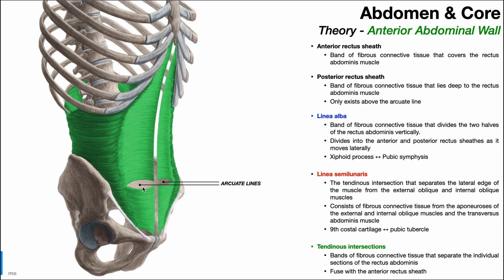At the arcuate line, there is a gap where the posterior rectus sheath no longer goes posterior to the rectus abdominis. It flips over and merges with the anterior rectus sheath, going anterior to the rectus abdominis. Because of that, below the arcuate line it is simply called the rectus sheath — no longer anterior or posterior. Below the arcuate line, you only have a unified rectus sheath composed of fibers from both the anterior and posterior rectus sheaths where they merge.